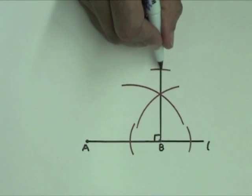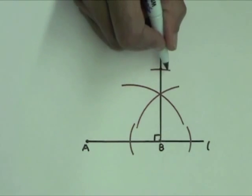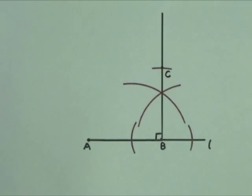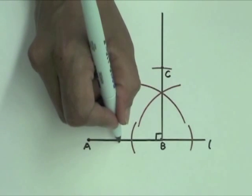Label this point of intersection as C. BC has the same length as AB.